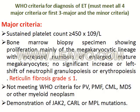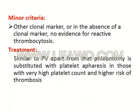WHO criteria for diagnosis of essential thrombocythemia: the patient must meet all four major criteria, or the first three major criteria and the minor criterion. Treatment for essential thrombocythemia is similar to polycythemia vera, except that phlebotomy is substituted with platelet apheresis in those with high platelet count and higher risk of thrombosis.